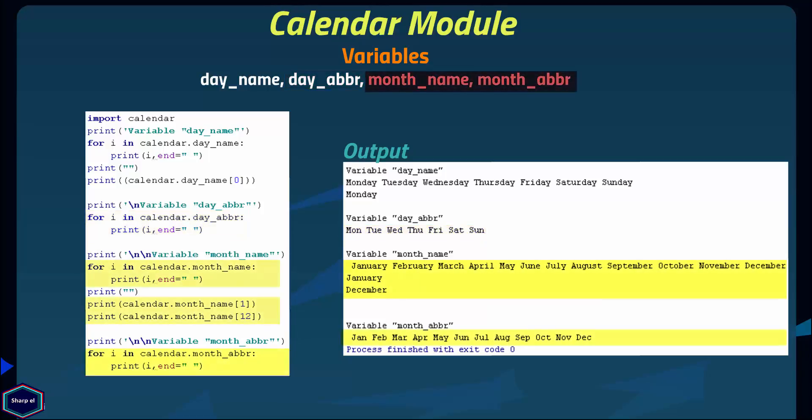Like day_name and day_abbr, both month_name and month_abbr variables are also array variables and they represent the months of the year in the current locale. Please note that January has index value 1 and not 0, and December has index value 12.